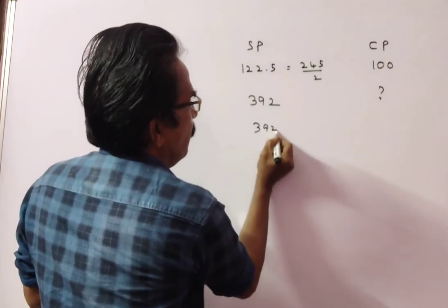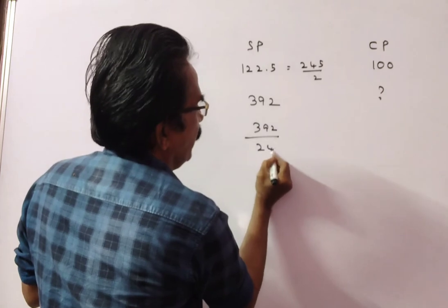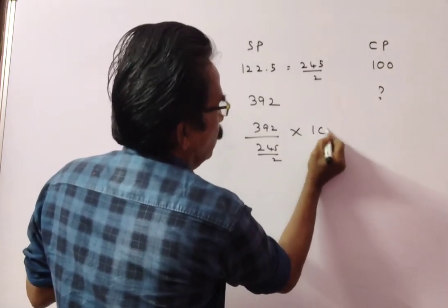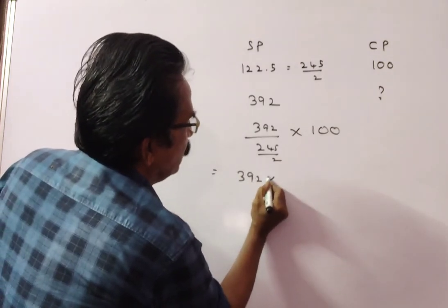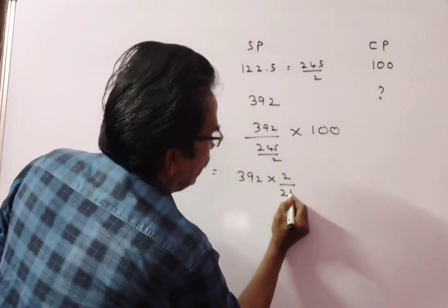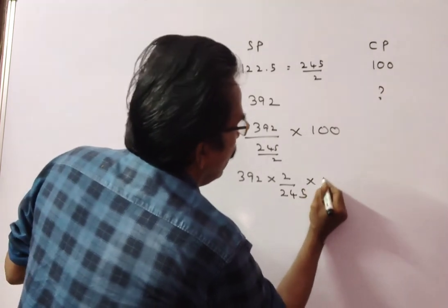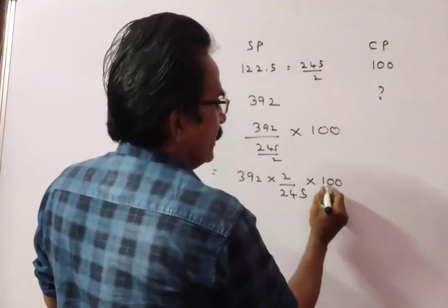392 by 245 by 2 into 100. This is equal to 392 into 2 by 245 into 100.